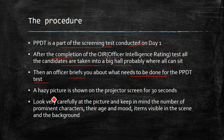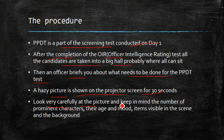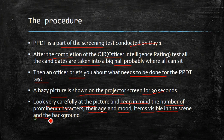After the briefing, a hazy picture — a picture which is not clear — is shown on the projector screen for 30 seconds. At that point of time you have to look very carefully at the picture and keep in mind the following things: the number of prominent characters, their age and mood, items visible in the scene, and the background of the picture.